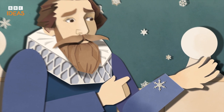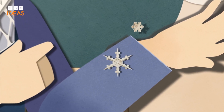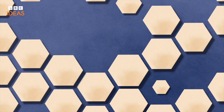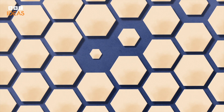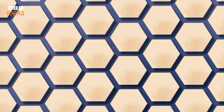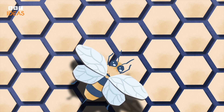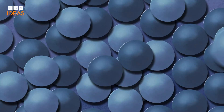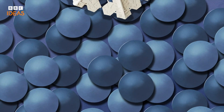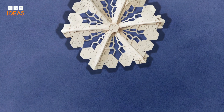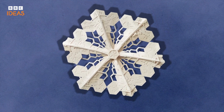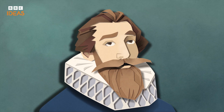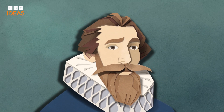And it got him thinking: why do snowflakes have six sides? Kepler's breakthrough was his theory that this hexagonal pattern is the most efficient use of space — whether it's a honeycomb within a beehive, or piles of stacked cannonballs, or a delicate transient snowflake. It took 400 years for his theory to be proven.